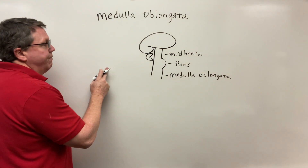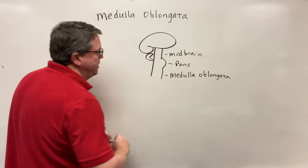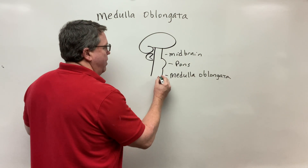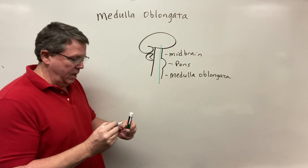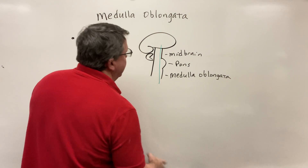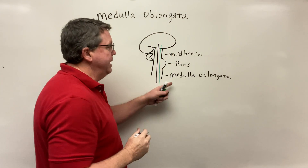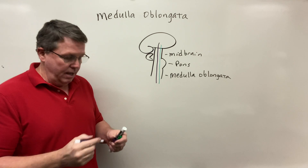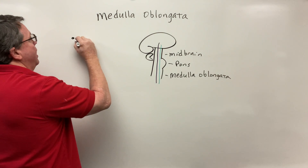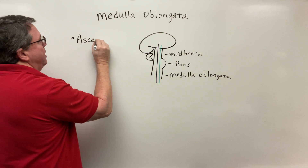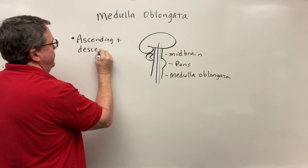The first thing about the medulla oblongata is that anything coming up from the spinal cord and going up into the brain has to pass through the medulla oblongata, just like anything coming down from the brain going to the body also has to pass through it. This means that in the medulla oblongata we have ascending and descending tracts.